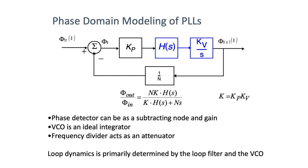You can see that you can actually change the dynamics of this loop — the transfer function — by controlling H(s). So depending on what kind of filter you put in this loop, you can actually control its overall closed-loop dynamics from the input to the output.